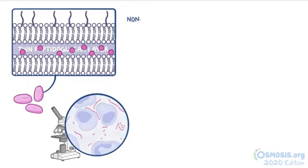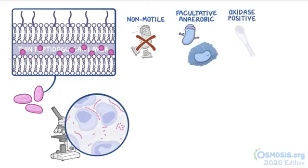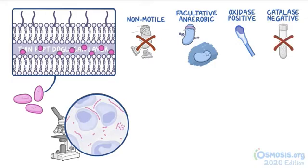Haemophilus ducreyi is non-motile, so it doesn't move. It is facultatively anaerobic, which means it can survive in both aerobic and anaerobic environments. It is oxidase positive, which means it produces an enzyme called oxidase, and catalase negative, which means it doesn't produce an enzyme called catalase.